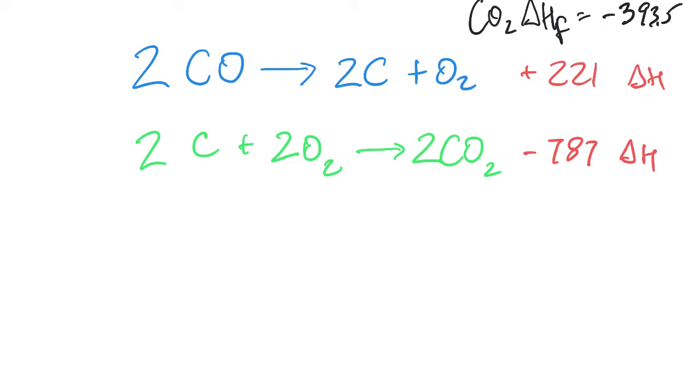So now we're going to take that equation that we just balanced on the previous screen, which is this equation right here, and we reversed it. So now we're starting with the CO, carbon monoxide, and breaking it down to the carbon and the oxygen. Now notice on the other page we had plus negative 221, and now it's plus 221. And that's because we have reversed the direction, and so that reverses the sign of this.